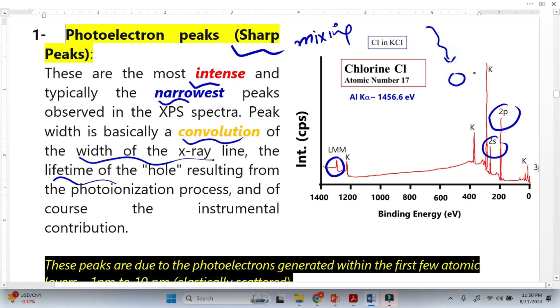The second is basically the lifetime of the hole, because we know that when we shine x-rays on the core electrons, this electron basically emits from the sample and here we have a hole. So that lifetime of the hole and the instrumental contribution, these three contributions basically make the peak here, and this is basically we call a convoluted peak. Once we want to deconvolute it, we have to take the high resolution XPS spectra.